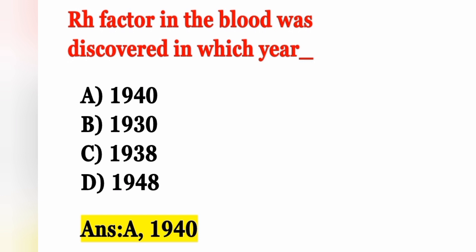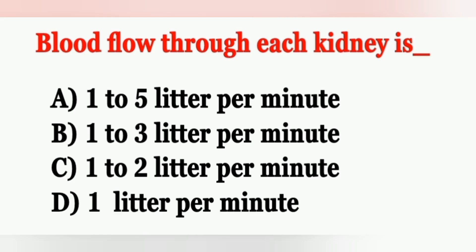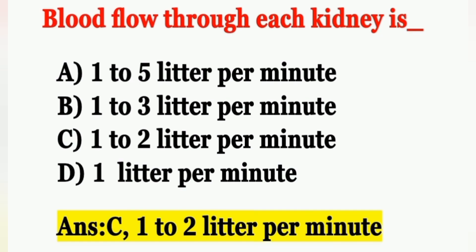Next question: Blood flow through each kidney is — Option A: 1 to 5 liters per minute, Option B: 1 to 3 liters per minute, Option C: 1 to 2 liters per minute, Option D: 1 liter per minute. Blood flow through each kidney is about 1 to 2 liters per minute. Option C is the correct answer.